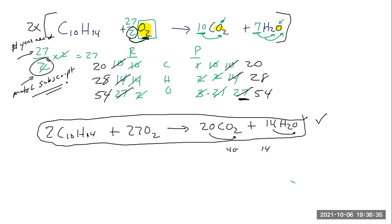A student confirms this material is also covered in the recorded lecture seven. The professor confirms it is and notes that this session is also being recorded so students can review it. Another student asks about the fraction step — specifically whether the second two in twenty-seven over two times two comes from the subscript on O2. The professor confirms yes, it comes from the subscript, just like when we took the ten and had to multiply it by the two in the formula. Same idea.